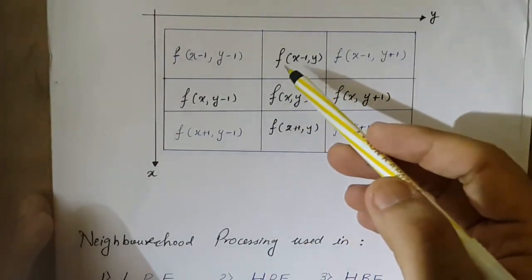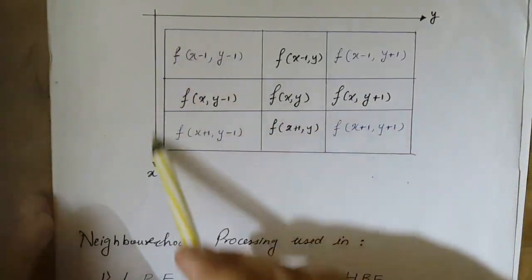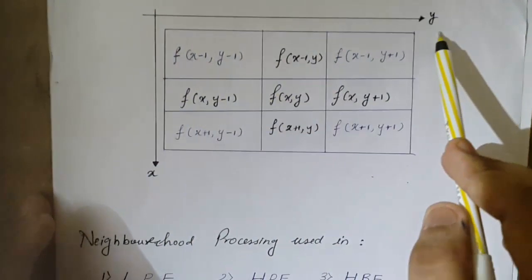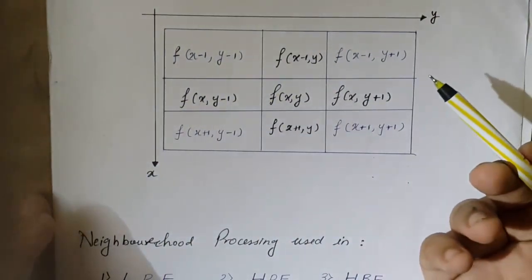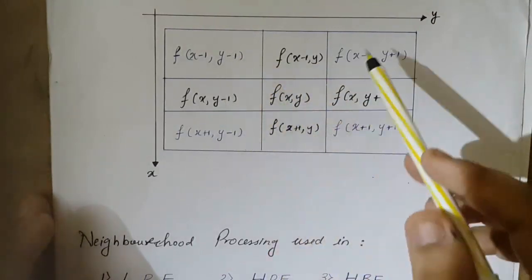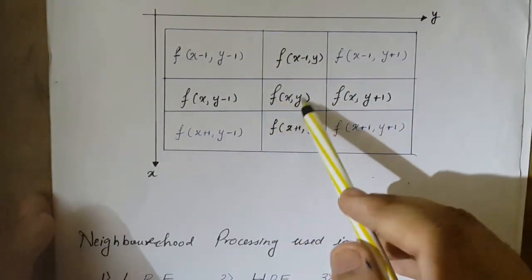Now how have I mapped the neighborhood? It's simple. This is my x direction and this is my y direction. Using the coordinate sense, I can get the locations of the neighborhood pixels around this f(x,y).